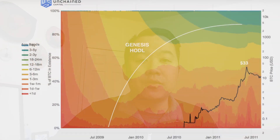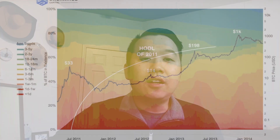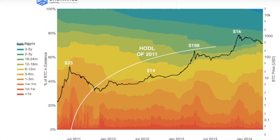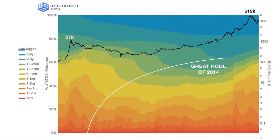Some interesting history about HODL waves: there have been three complete arcs or wave cycles so far, and we're on our fourth. The first was the Genesis HODL from 2009 to 2011, when bitcoin went from zero to $33 — mostly Satoshi and early folks with not many exchanges, so they were kind of forced to hold after mining. The HODL of 2011 went from 2011 to 2013, from $33 to $1,000, as more maturity emerged and exchanges like Kraken, Coinbase, and Mt. Gox became available.